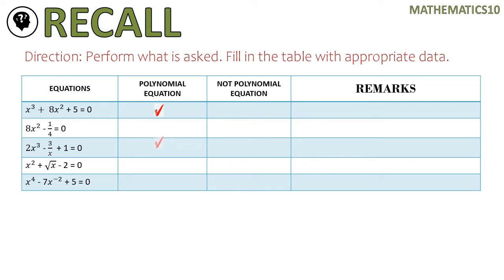For number two, it is still a polynomial equation even though we have one-fourth. As you can see, one-fourth there is our constant, so it doesn't matter. Based on the definition of polynomial or polynomial equation, the variable must have positive whole numbers as exponents — not considering constants or other numerical coefficients.